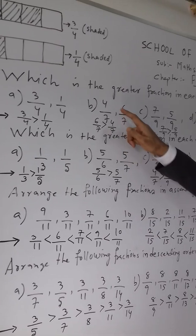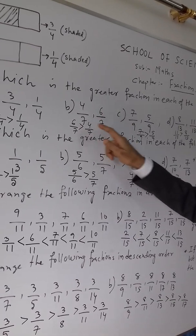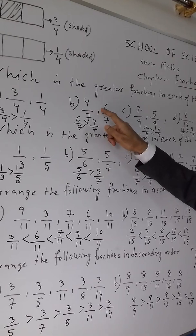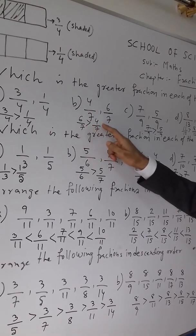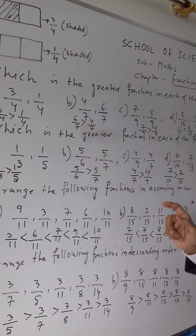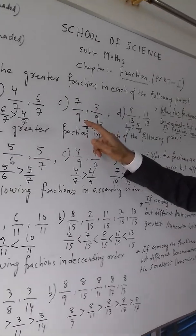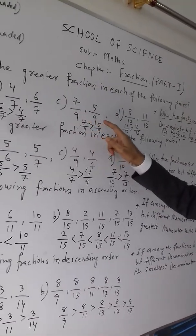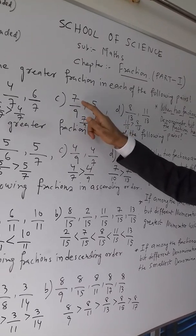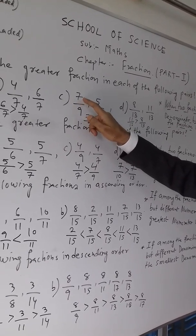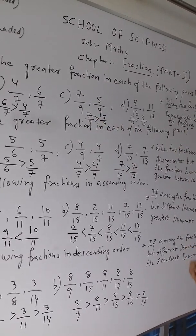Now, 4 by 7 and 6 by 7. Both have the same denominator, but 6 is greater than 4, so 6 by 7 is greater than 4 by 7. Similarly, for 7 by 9 and 5 by 9, denominators are same so you compare the numerator. 7 is greater than 5, so 7 by 9 is greater than 5 by 9.